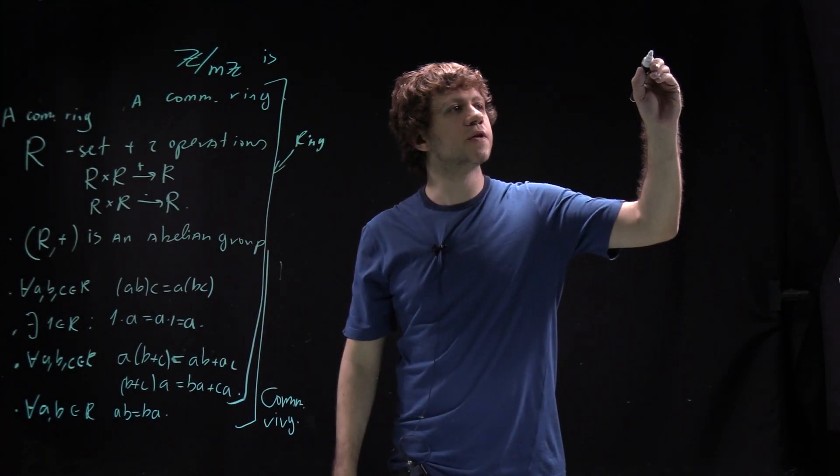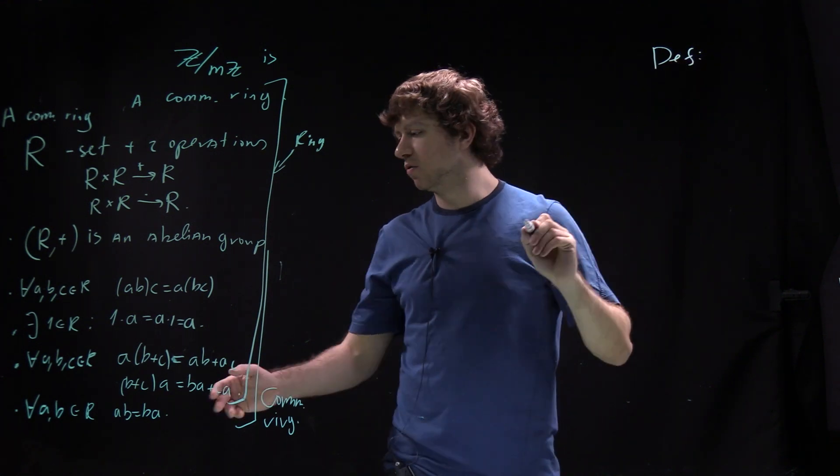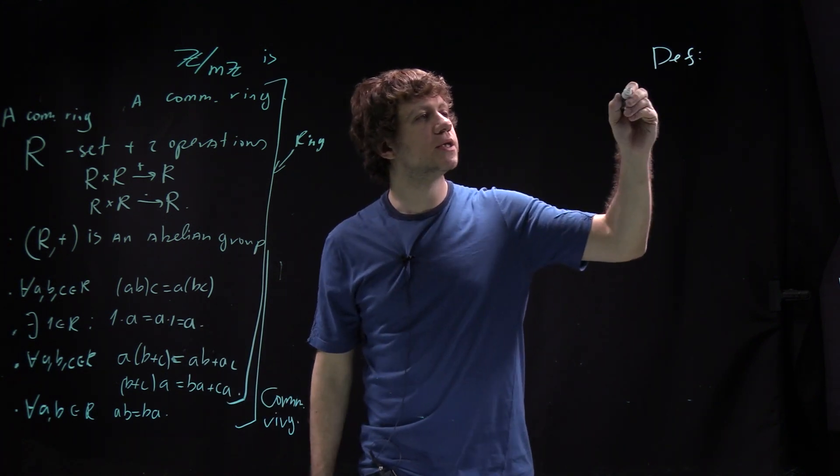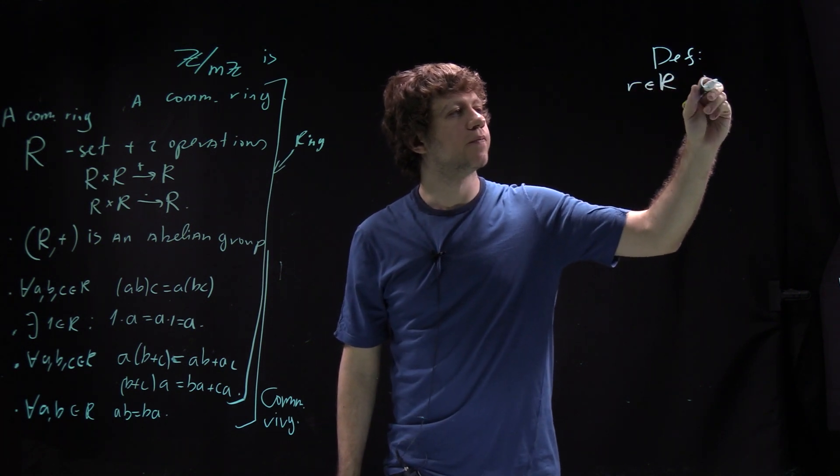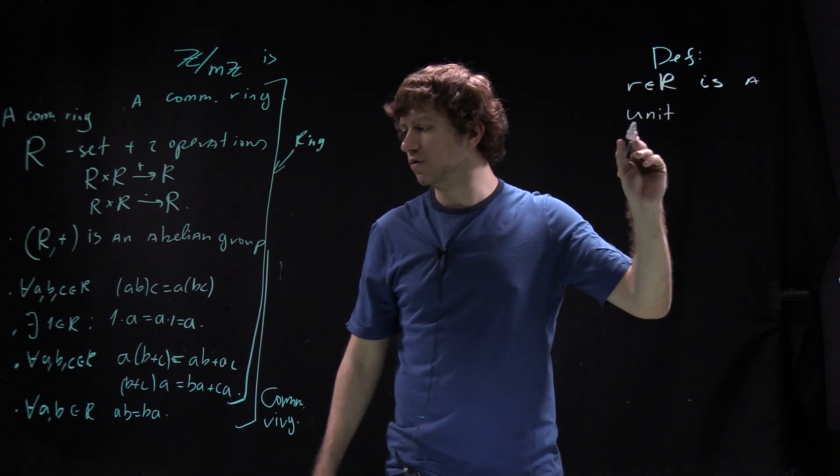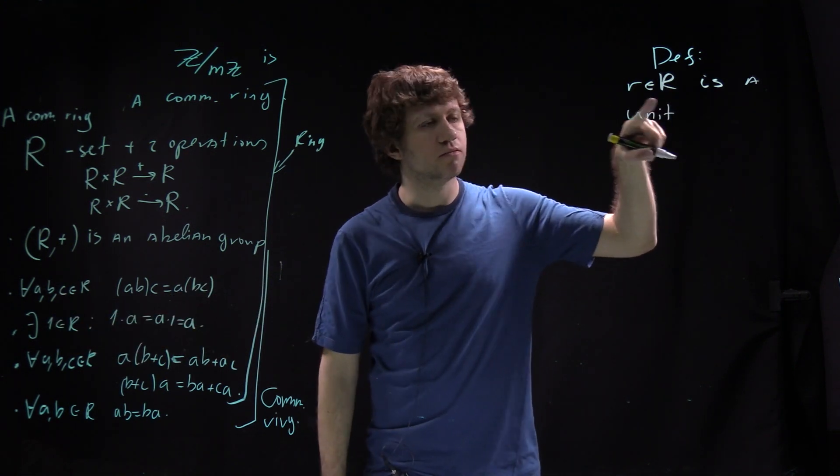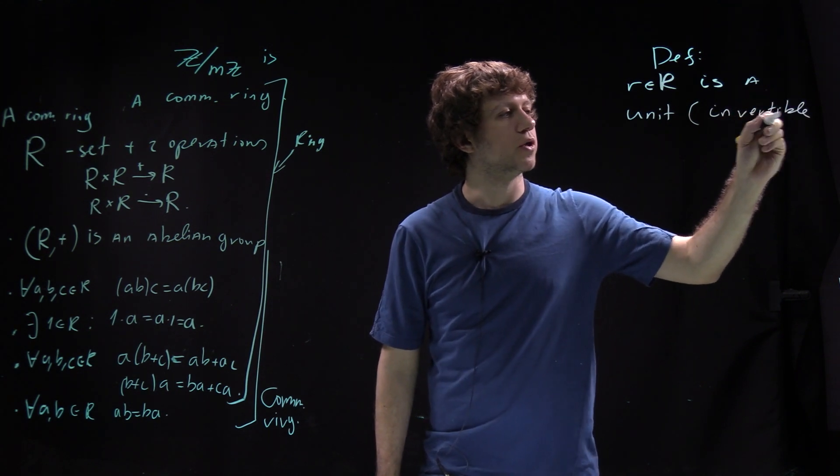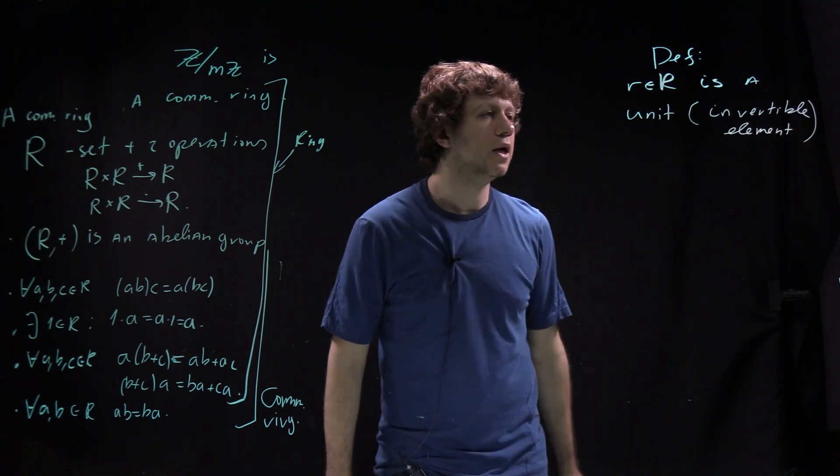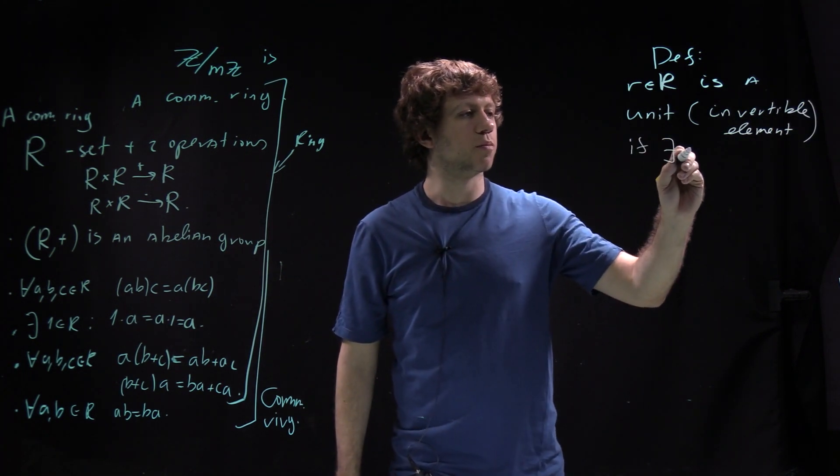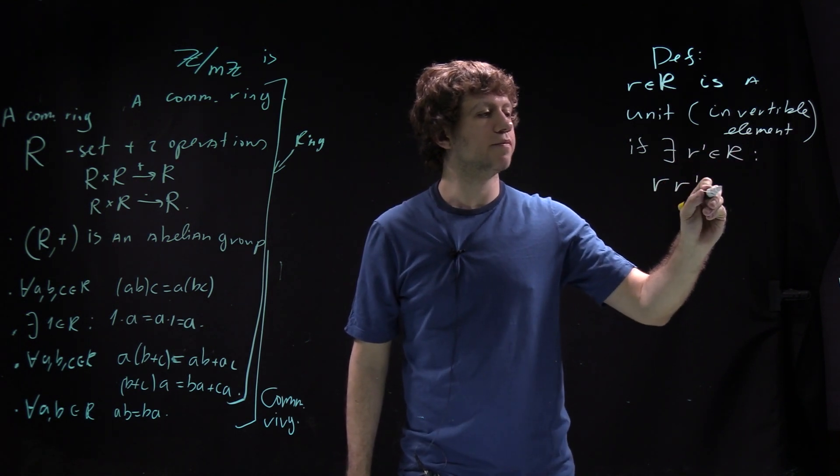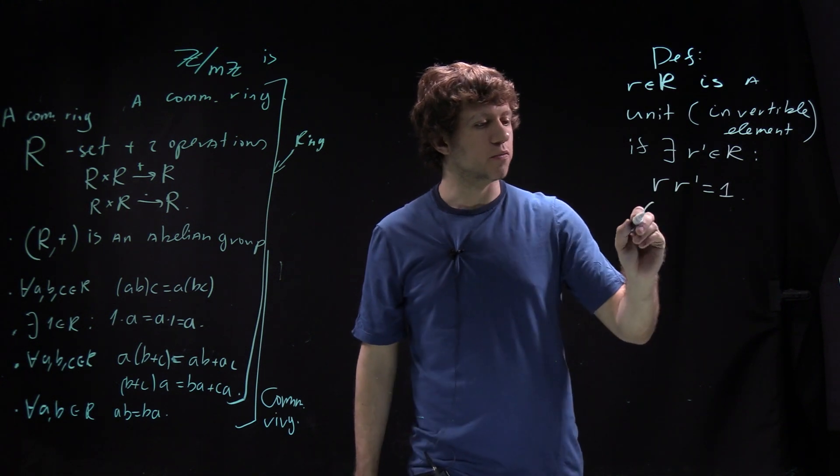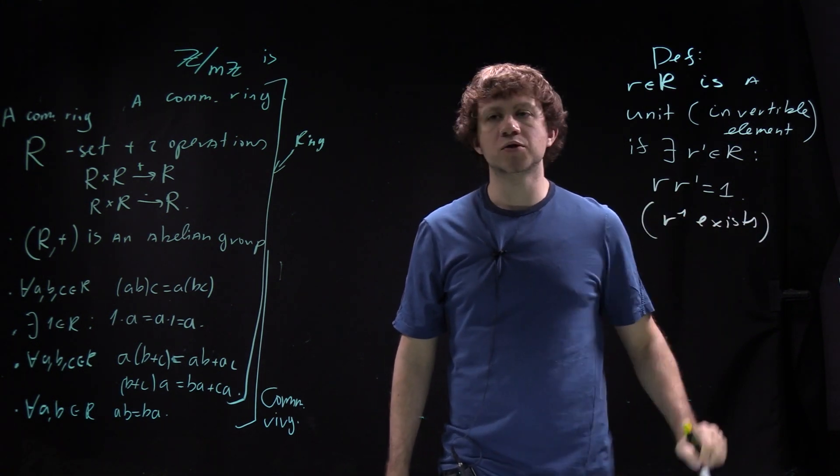Another important definition: R in R is a unit, also called an invertible element. Don't confuse it with identity. A unit exists if there exists R prime in R such that R times R prime is 1. Basically R inverse exists. That's not always the case.